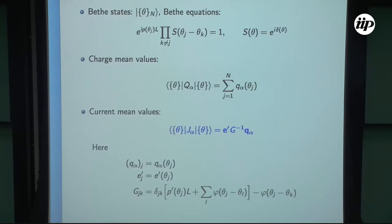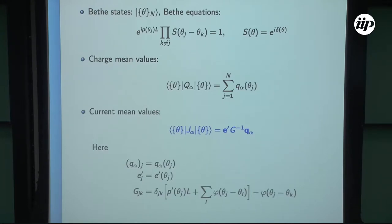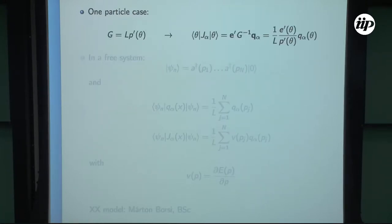I argue this formula should be quite general and valid in many models. We have a proof for XXZ and XXX type models using algebraic Bethe ansatz and form factor expansion. Our proof already applies to higher spin integrable XXZ and similar models, and the formula is so simple and suggestive that it very likely holds in other models as well, including perhaps nested models — but we are not there yet; it's a topic of later research. In the one-particle case, the Gaudin matrix is just one matrix element — the volume times the P-derivative function — and our formula gives the current mean value as the charge mean value multiplied by the bare group velocity dE/dP.